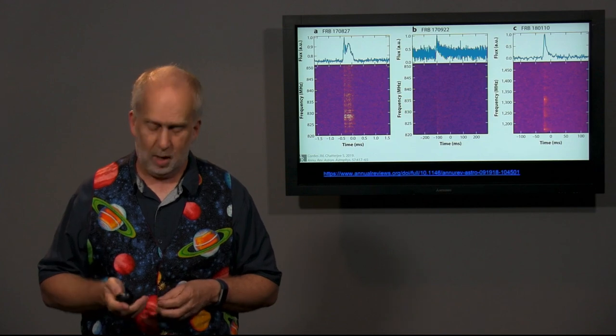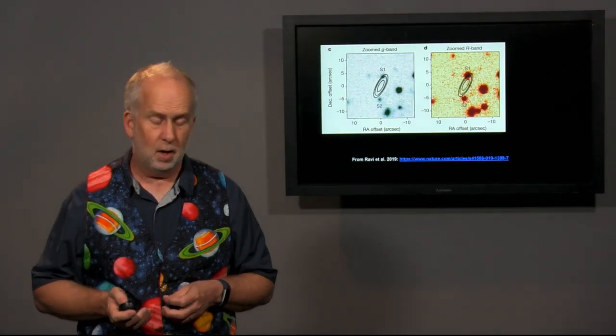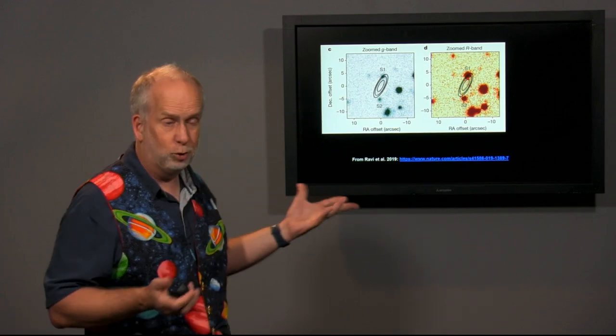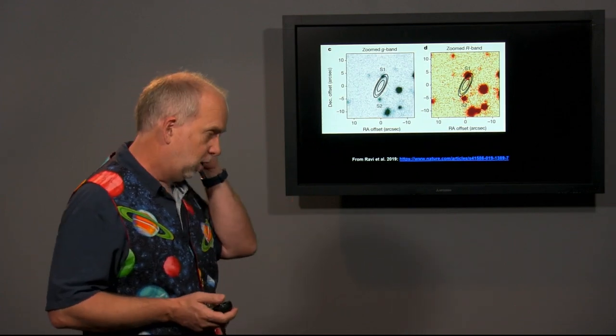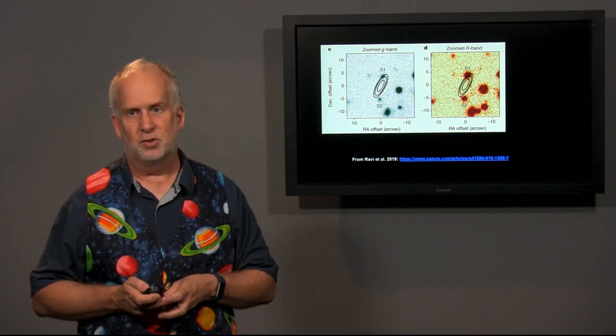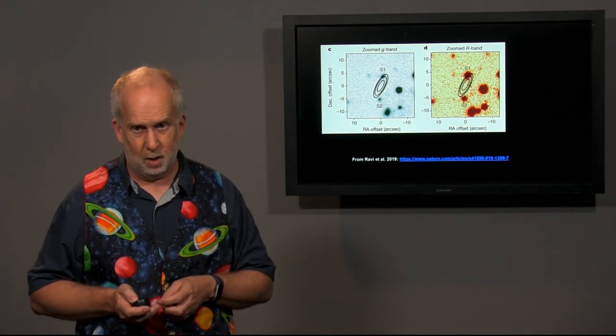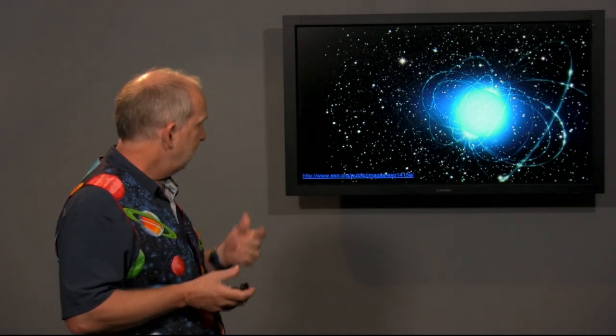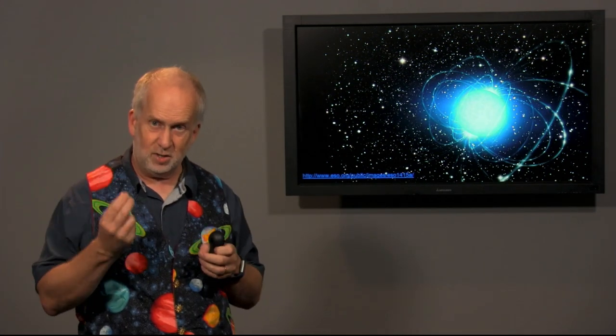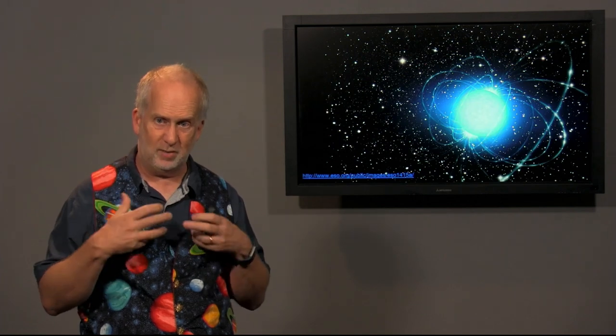And our best guess at the moment: we've pinpointed where a couple of them come from. Most of them we haven't got optical counterparts. There are a couple which come from galaxies hundreds of millions to a billion light years away. And most likely at the moment we are thinking they are some form of highly magnetized neutron star, freaking out in some way.